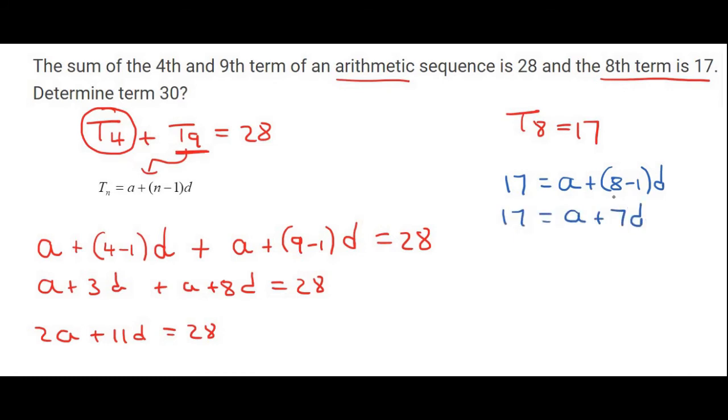We now have two equations, two unknowns. There are various ways that you could solve this. What I'm going to do is use this equation and get A alone. So that would be A equals 17 minus 7D, and I'm going to plug that into the other formula.